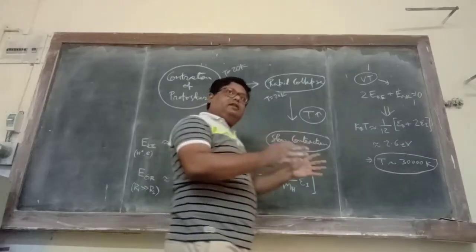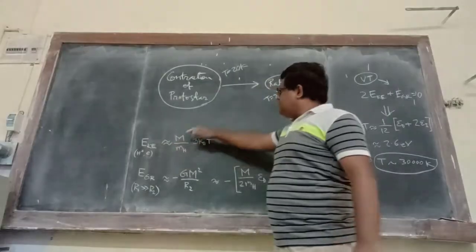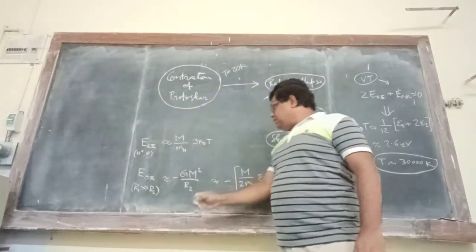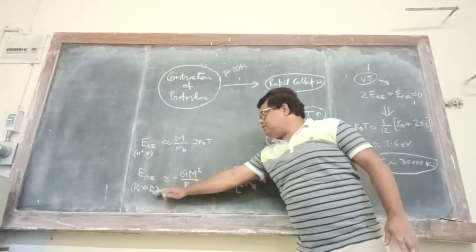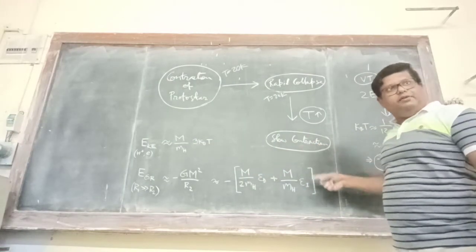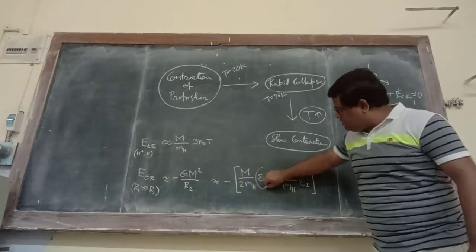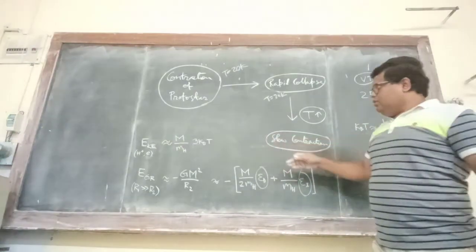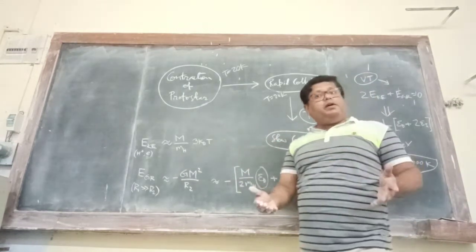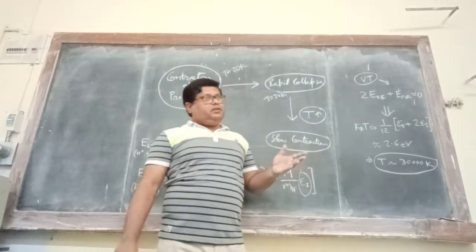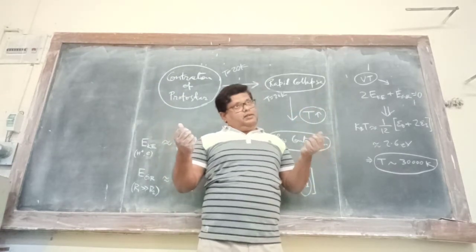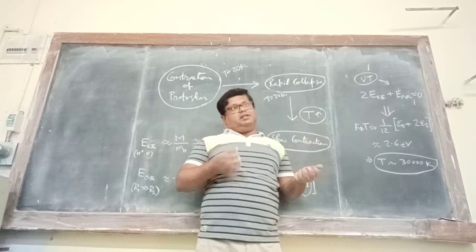This gravitational energy equals the energy released due to dissociation and ionization. Now we can relate these two important energies — gravitational energy and kinetic energy — using the Virial theorem. For a non-relativistic gas, E_gr + 2E_k = 0. For a relativistic system, E_gr + E_k = 0, so the second kinetic energy term is absent. This is for a non-relativistic system. If we equate these two together, we will get the value of kT.